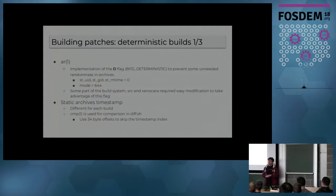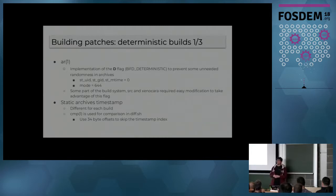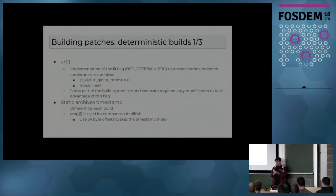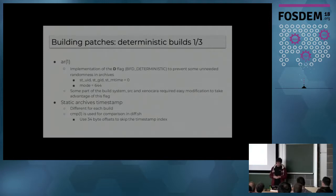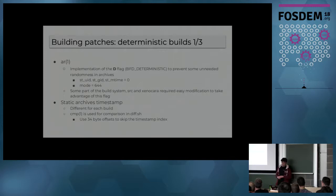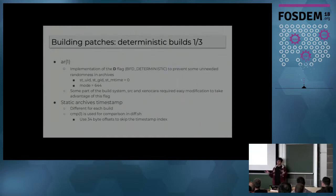The main issue when we first started implementing syspatch is that on OpenBSD, we don't have reproducible builds — there is no effort whatsoever into that right now. So we looked for what I call deterministic builds: we know that if we build this release on one machine and that release on another machine, we will end up with at least the same set of build options. The first issue was with the archiver. We had to implement the -D flag — the deterministic flag — to prevent randomness in the archives. For example, we hard-code UID, GID, and mtime to 0 and the mode to 644. Otherwise it could be completely random and we had differences in each and every archive. That was easy to fix.